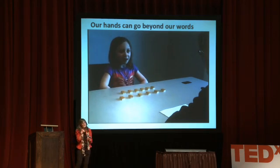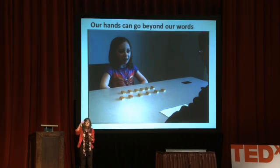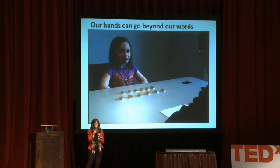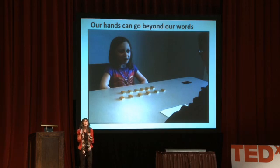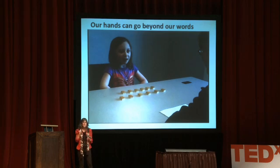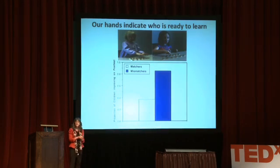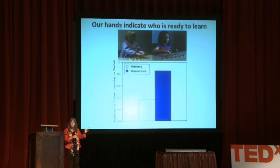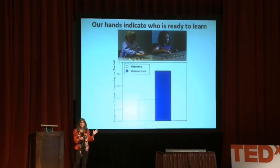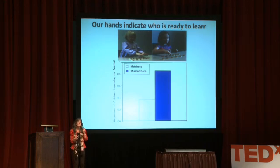So this child has produced what we've been calling a mismatch. She's saying something different with her hands — something substantive — than she says with her mouth. When we saw kids like this, we thought maybe they know a little bit more than matching children. So we gave them all instruction in conservation and looked to see who would succeed. The mismatching children were much more ready to learn than the matchers.